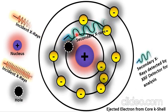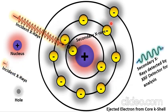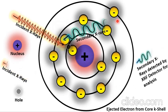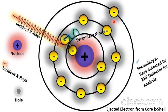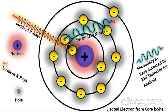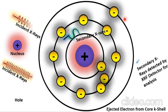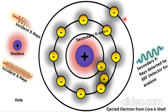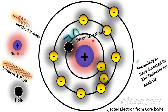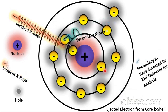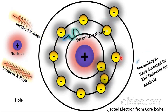These secondary X-rays are detected by the X-ray fluorescence spectroscopy detector, and on the basis of the analysis, the chemical composition and the presence of elements in the material are determined. To summarize: an atom consists of a nucleus and electrons revolving in energy level shells. For sodium, the K shell has two electrons, the L shell has eight, and the M shell has one.